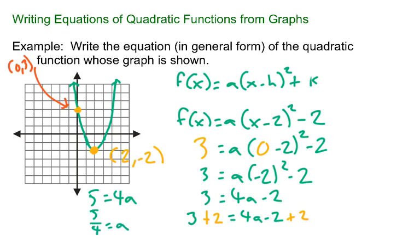Okay, we don't always love fractions. But that tells me that the equation of that parabola has to be f(x) equals 5 fourths times (x minus 2) squared minus 2. And that's the equation of the parabola. So we're kind of done.